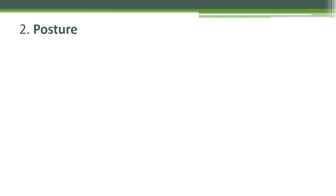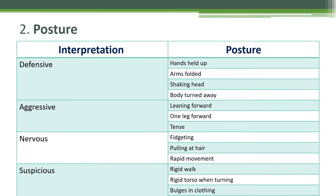Posture can interpret the intention of people and can also be used to conceal objects or weapons being carried. The CCTV operator must be aware of a person's posture. Posture interpretations: defensive posture — the person is not presenting a threat. Signs include hands held off, arms folded, shaking head, and body turned away. Aggressive posture — this is very serious. Signs include the person leaning forward, one leg forward, or tense body. They can harm people or sabotage property.